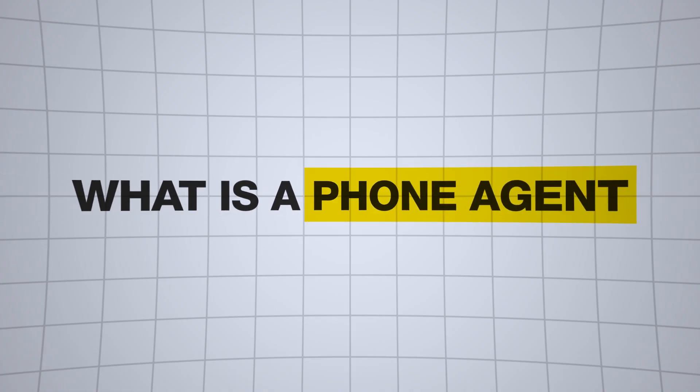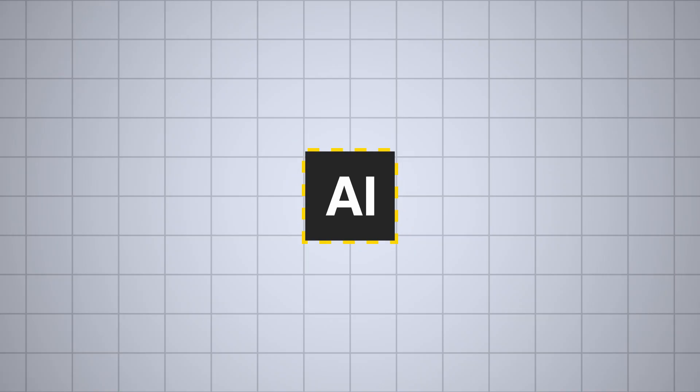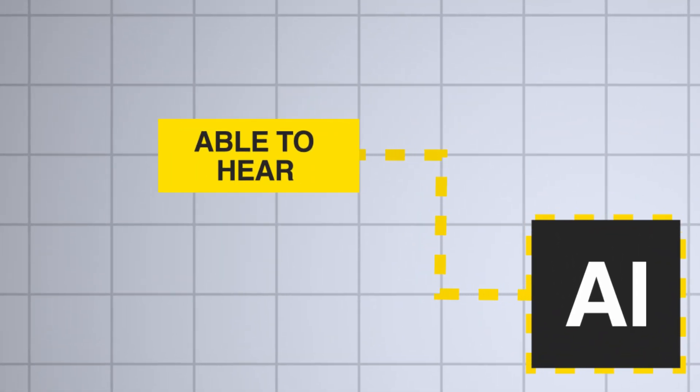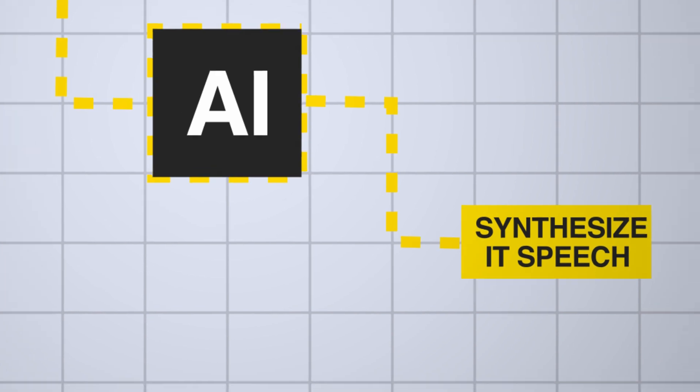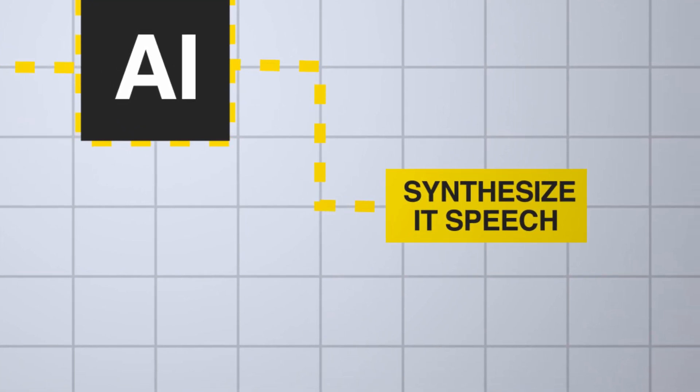If you are new to the world of voice AI, you might ask: what is a phone agent? A phone agent is simply an AI that is able to understand and hear another person on the phone, as well as synthesize its speech back to the user — essentially an AI that can talk to another person via a phone. We usually call them agents because the AI will have tools or functions allowing it to manipulate real-world things, like adding things to a database, booking times on a calendar, etc. The real-time API allows us to build voice AI agents, but we have to find ways to deploy it to a phone to make it a phone agent.